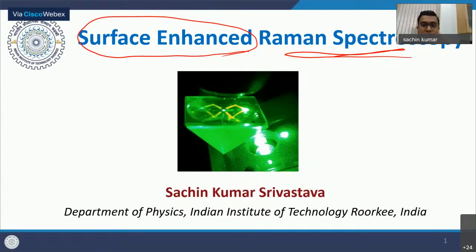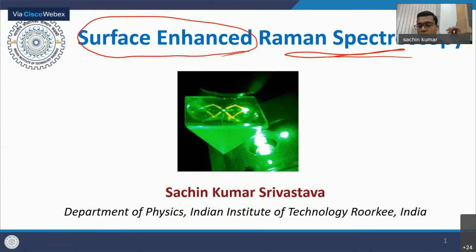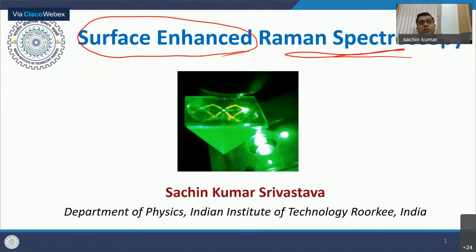In my group, we use various techniques involving surfaces to enhance spectroscopic signals. When I am talking about these surfaces, it doesn't only explicitly enhance the Raman spectra, but also it can be used to enhance fluorescence signals, absorbance, or any other phenomena. People are also using these kinds of surfaces to enhance solar cells, and you can use these surfaces for enhancing signals taking place at the surfaces — for studying dynamics, biological reactions, or chemical reactions on a surface.